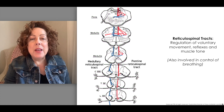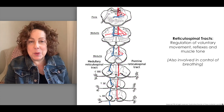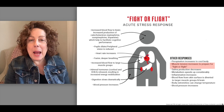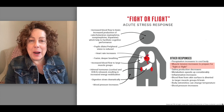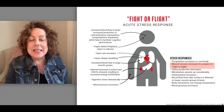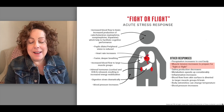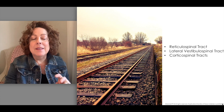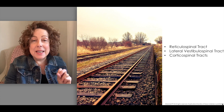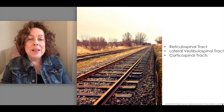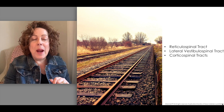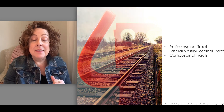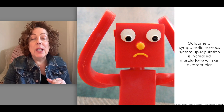When we move into various degrees of the stress response — whether that's anxiety, worry, or a full-fledged fight or flight — what happens through the impact of the brain through those tracts on the muscles is an increase in resting tension: increased muscle tone. Those three spinal tracts — the reticulospinal tract, the lateral vestibulospinal tract, and the anterior and lateral corticospinal tracts — are influencing the muscles when we have a sympathetic nervous system upregulation, resulting in an increase in muscle tone with an overall extension bias.